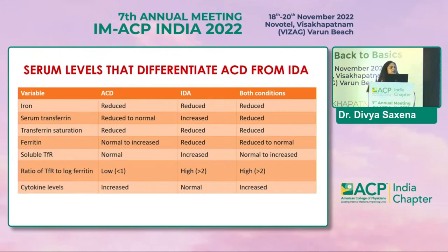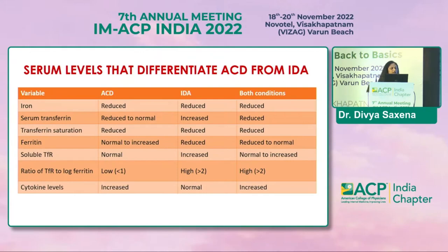To differentiate between anemia of chronic disease and iron deficiency anemia: serum iron is reduced in all three forms — whether ACD, IDA, or both coexisting. Serum transferrin is reduced in ACD, increased in IDA, and reduced if both conditions coexist. Transferrin saturation is reduced in both ACD and IDA. Ferritin is normal to increased in ACD, reduced in IDA, and reduced if both coexist. Soluble transferrin receptor is normal in ACD, increased in IDA, and may be normal or increased if both conditions coexist.